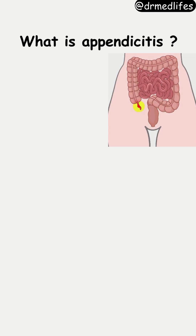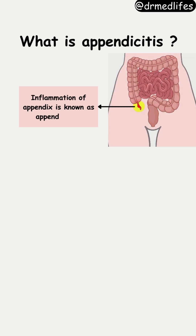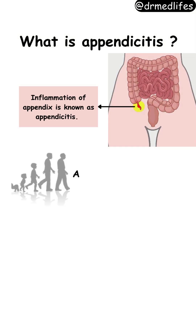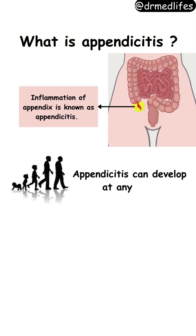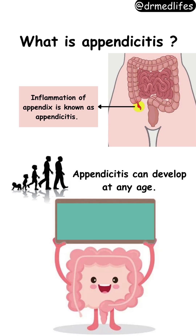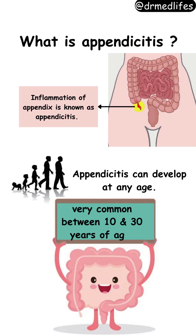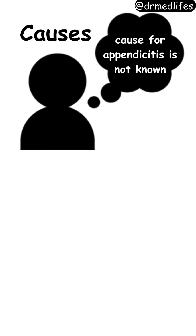What is appendicitis? Inflammation of the appendix is known as appendicitis. Appendicitis can develop at any age. However, it is very common between 10 and 30 years of age. The exact cause for appendicitis is not known.